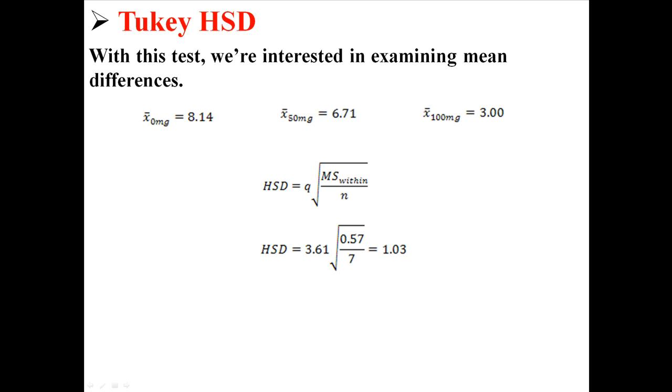So now we put in this 3.61 and find an HSD of 1.03. What that means is that any two means that are more than 1.03 apart are significantly different. Down here you can see I'm making three comparisons. 0 and 50 are 1.43 away from each other, so that means they're different because it's greater than 1.03. 0 and 100 is 5.14 away from each other, so that's different. And 50 and 100 is 3.71 away from each other, so that's different. So all three of these groups are different from each other using the Tukey HSD post-hoc test.